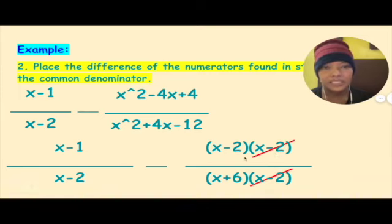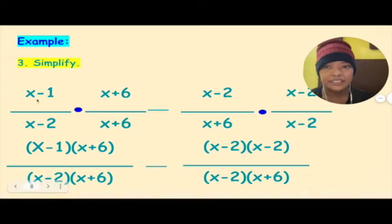Matitira po sa inyo, ganito na lang. x minus 1 over x minus 2 minus x minus 2 over x plus 6. Paano nga po kunin yun? Parang nung nag-add din po tayo, kunin yun yung LCD. You just get the LCD or you multiply yung x sa denominator nung kabila. x plus 6 by x plus 6.